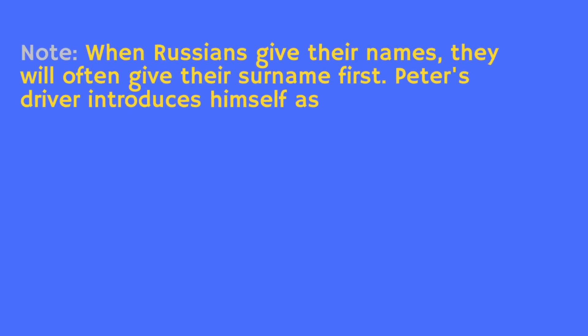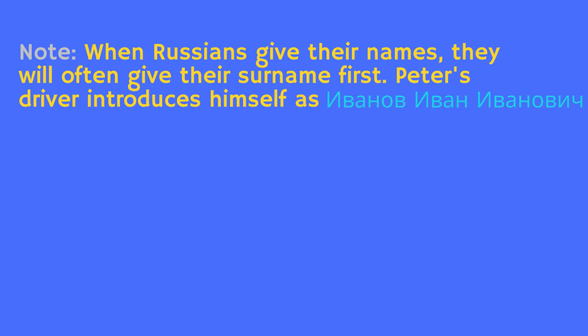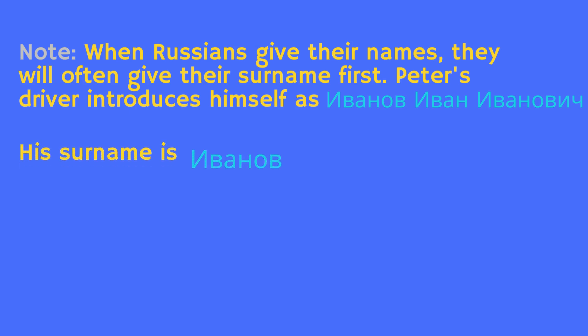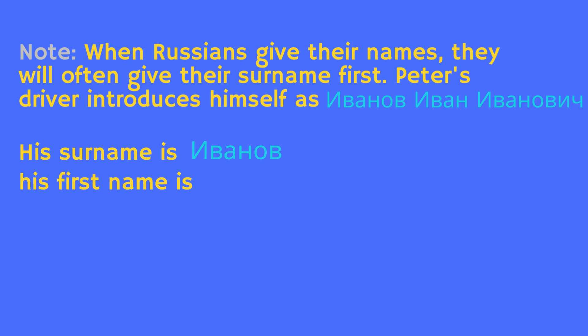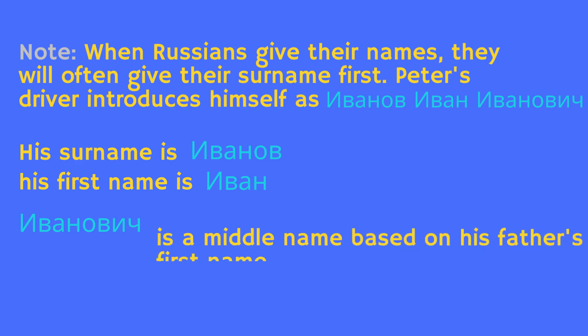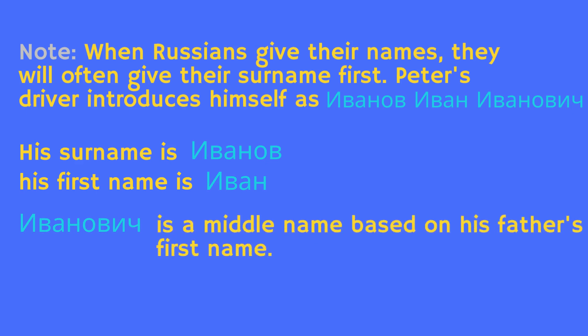When Russians give their names, they will often give their surname first. Peter's driver introduces himself as Ivanov Ivan Ivanovich. His surname is Ivanov. His first name is Ivan. Ivanovich is a middle name based on his father's first name.